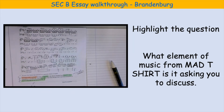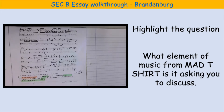Hello Year 11 and welcome to our first Section B walkthrough. We are going to do a past paper question for the Section B essay that you do at the end of your music exam. In that question you will have to compare and contrast a familiar piece — one of the eight set works we've studied — with an unfamiliar piece that is hopefully similar to the one you're comparing it against. Today we're going to start with Bach's Brandenburg Concerto.